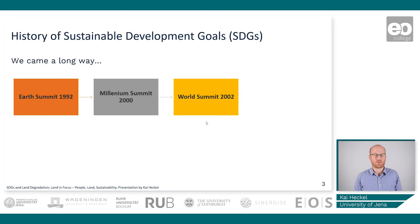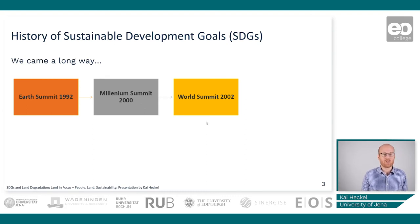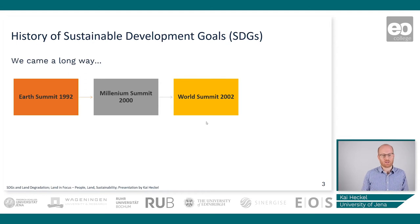The next step in 2002 was the World Summit, held in Johannesburg, South Africa. There, the eradication of poverty globally was an important topic, building on top of Agenda 21. The summit also put more emphasis on multilateral partnerships, meaning that countries should collaborate more and hold each other accountable, at least among UN member states.